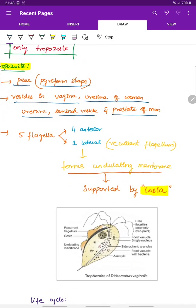It has 5 flagella, 4 anterior flagella and 1 lateral flagella. This lateral flagella is called the recurrent flagellum which forms the undulating membrane. And this undulating membrane is supported by costa.